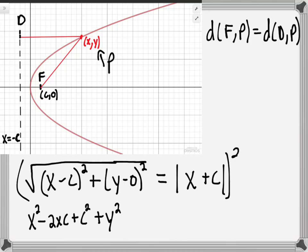On the right side, when we square the absolute value, it becomes (x + c)² = x² + 2xc + c². The absolute value goes away because squaring makes it positive anyway.